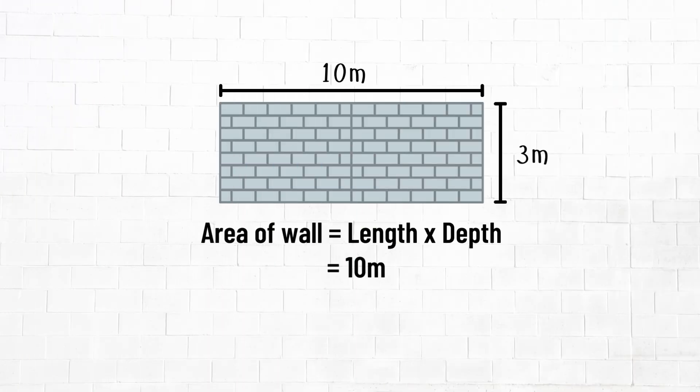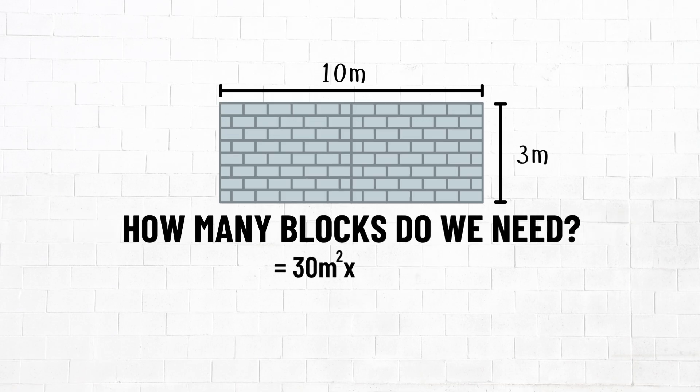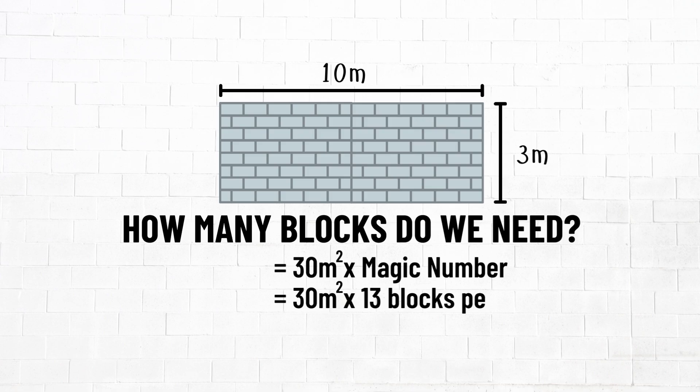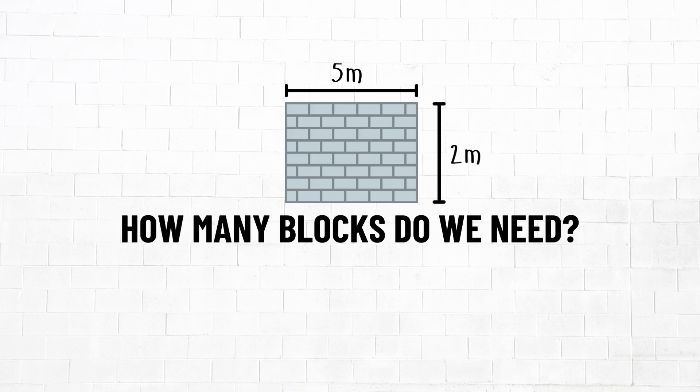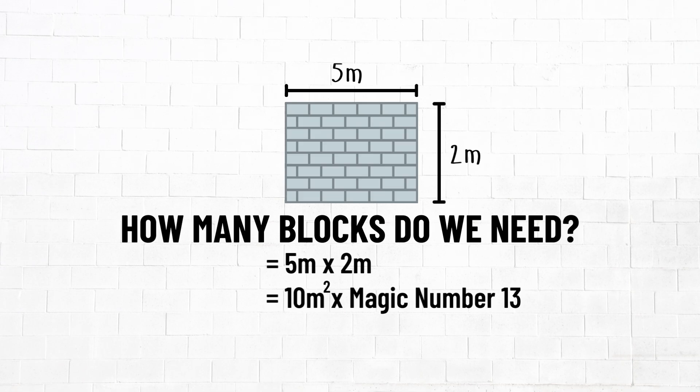If our wall is 10 meters by 3 meters, it means our wall is 30 square meters. How many blocks do we need? 30 times magic number 13, and that equals 390 blocks. Suppose we had a 5 meter wall that is 2 meters tall. That means 5 by 2 by magic number 13 is equal to 130 blocks.